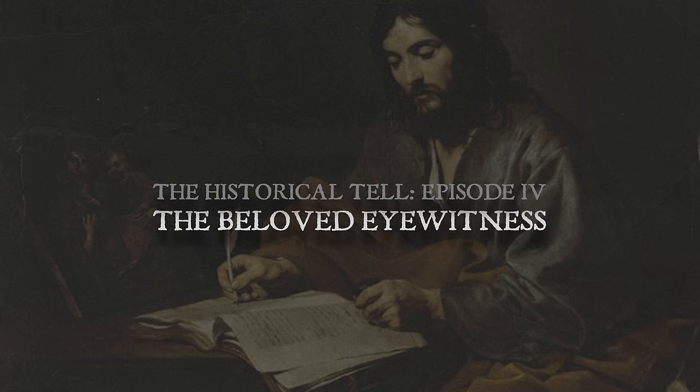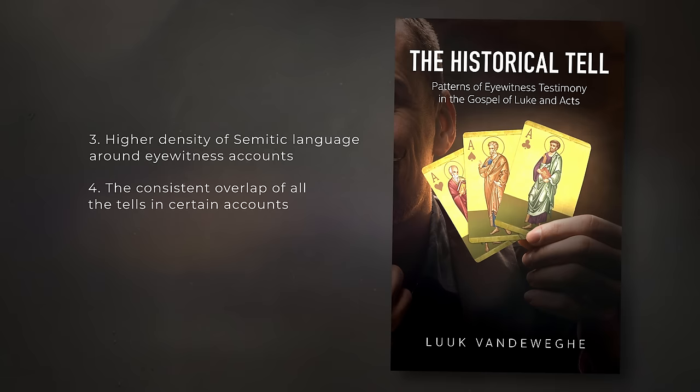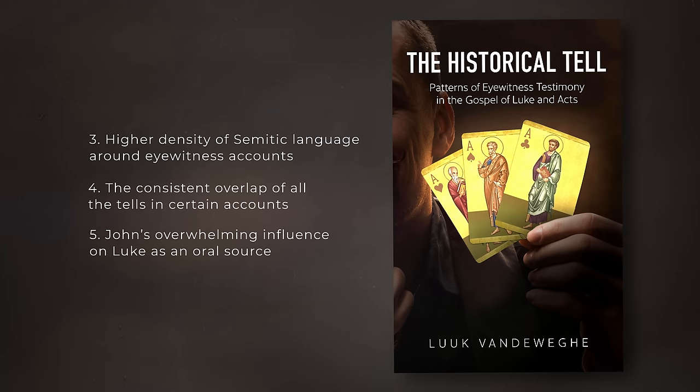Welcome to The Historical Tell. This is episode four. In episode three, we picked up on the third and fourth of Luke's tells: how Semitisms cluster around eyewitness material and how various features of Luke's writing converge with historical data. In this episode, we're discussing the fifth and final tell — that Luke includes eyewitness material from John.